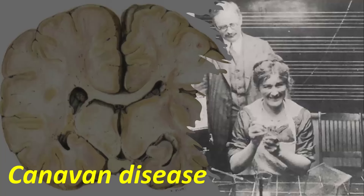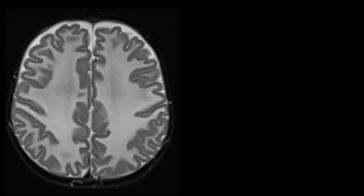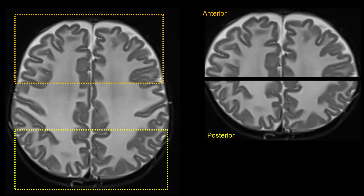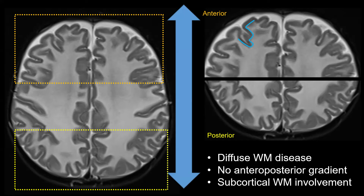Canavan disease is also characterized by diffuse white matter abnormalities. Looking at T2 weighted images of the supratentorial brain parenchyma of a very young child — probably performed during the first months of life. Comparing the frontal and posterior regions, we see no difference — so there is no gradient, which is very important in distinguishing it from Alexander disease. We also see involvement of the subcortical U-fibers. To summarize: a diffuse leukoencephalopathy with diffuse white matter abnormalities, but without a gradient and with subcortical U-fiber involvement.